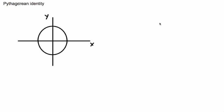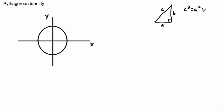Let's put things together with the Pythagorean identity. First, remember what the Pythagorean theorem is. If we have a right angle triangle, we call the sides a, b, and c, where c is opposite the right angle. We know that c squared equals a squared plus b squared. This is the Pythagorean theorem.